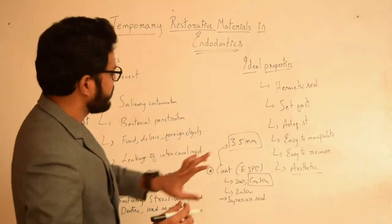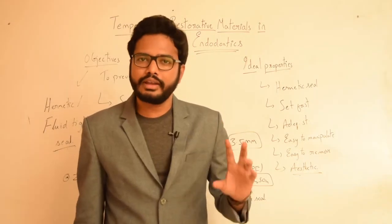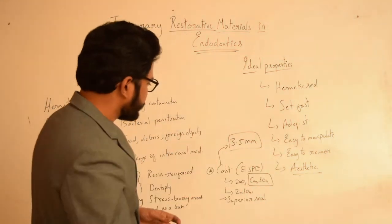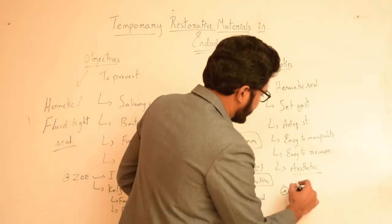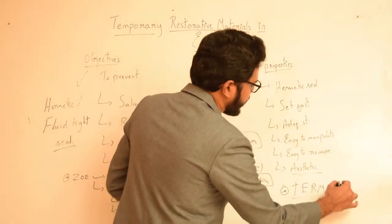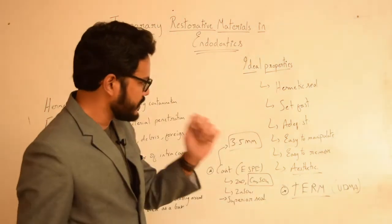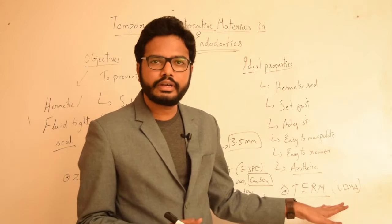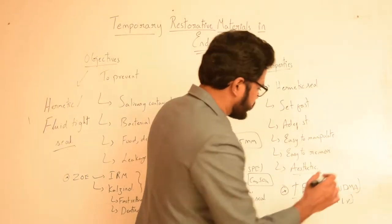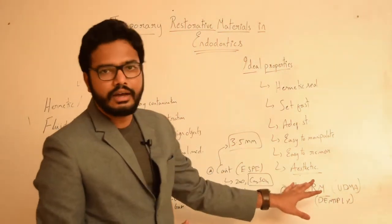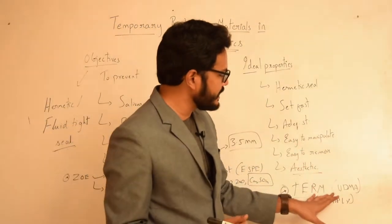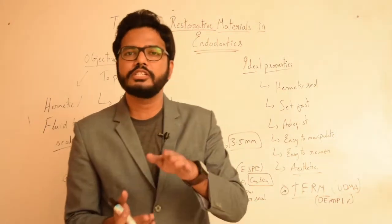The minimum thickness of Cavit that has to be placed in a cavity is 3.5 mm — this has been asked in various previous entrance exams, especially AIPG. Coming to another temporary restorative material — TERM, which is basically a composite resin. It chiefly contains UDMA (urethane dimethacrylate) as the chief polymer, along with various inorganic fillers, pigments, and photosensitizers. TERM is also supplied by Dentsply. The advantage of TERM is that, unlike Cavit which needs a minimum of 3.5 mm thickness, TERM can be placed even in shallow cavities.